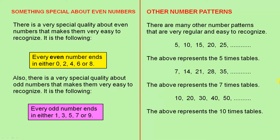Also, there is a very special quality about odd numbers that makes them very easy to recognize. It is the following: Every odd number ends in either 1, 3, 5, 7 or 9. So it doesn't matter how big or small the number is. If the last single number is one of those 5, it is an odd number.